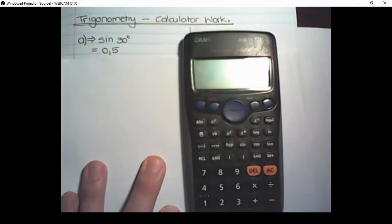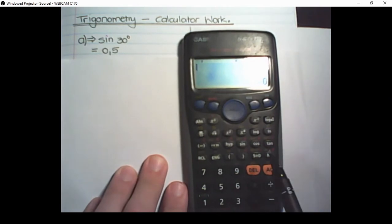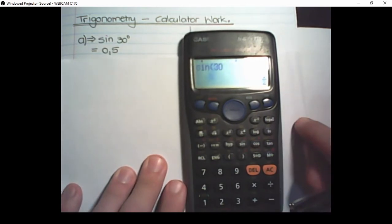The first one is very simple. We simply put in the sine of 30 in our calculator. So we locate the sine button. Sine. I put in the value of 30. Press equal. That value is a half.